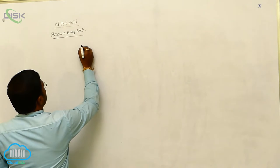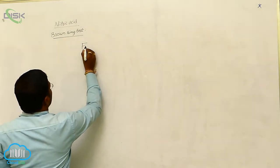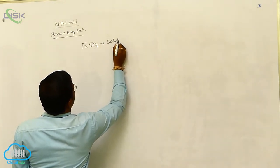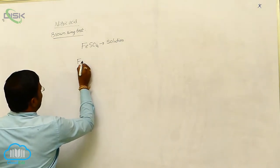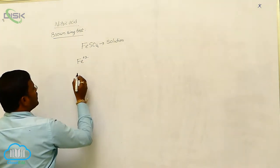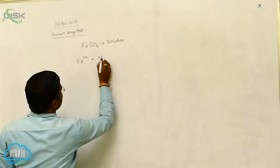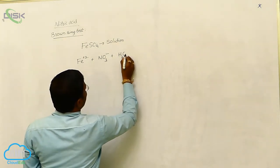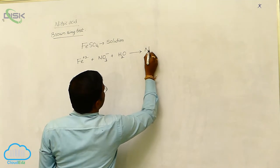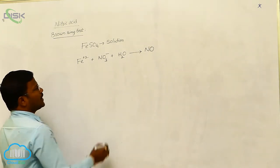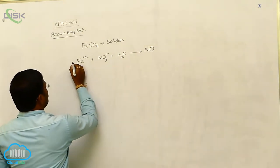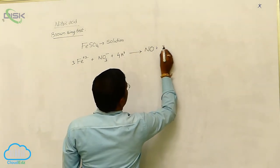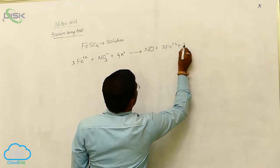During this test, ferrous sulfate solution, aqueous ferrous sulfate solution is used. The chemical reaction expected is the iron ions present in ferrous sulfate solution in aqueous medium are going to reduce nitrate ions into nitric oxide. NO₃⁻ reduced to NO, that is nitric oxide. In the presence of 4H⁺ ions, the resulting species are 3Fe³⁺ plus 2H₂O.